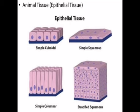Next topic is Animal Tissues. The classification of body tissues is taken out into four divisions: Epithelial Tissue, Connective Tissue, Muscular Tissue and Nervous Tissue.